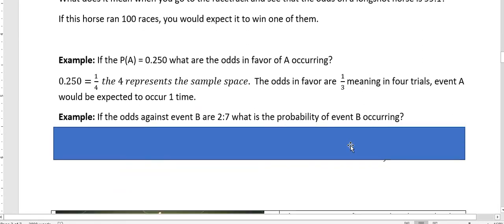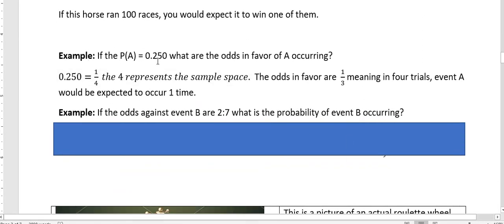Okay, next example. If the probability of event A happening is 0.250, what are the odds in favor of it occurring? So you have to be able to go from probability to odds or from odds to probability. We went from odds to probability in the last example. And now I want you to be able to go from a probability to odds. Well, when you have a probability of 0.250, that is 25% or 1 fourth, right? You can take 25 over 100 and reduce it to get that 1 fourth. But most people recognize 0.25 is 1 fourth.